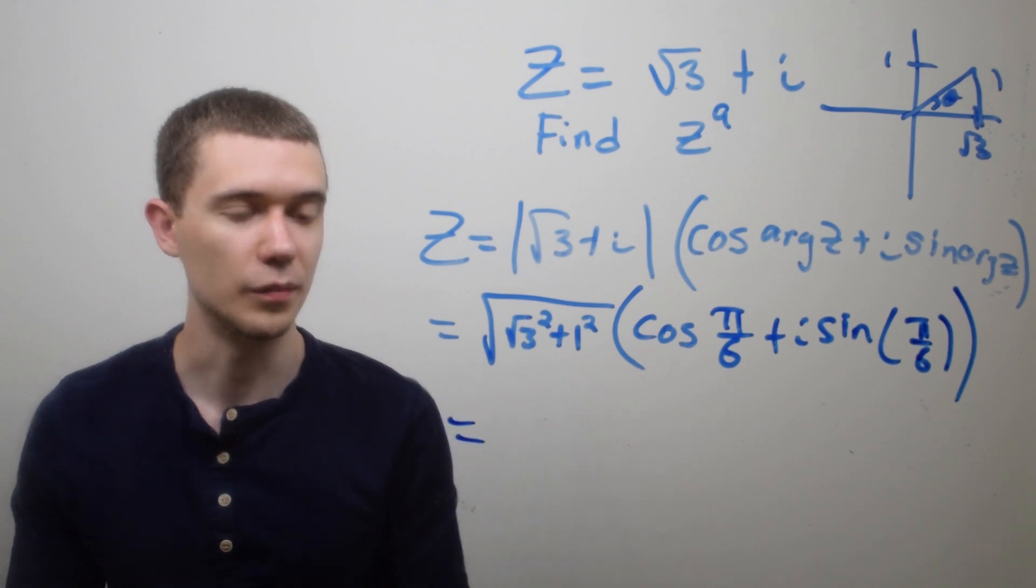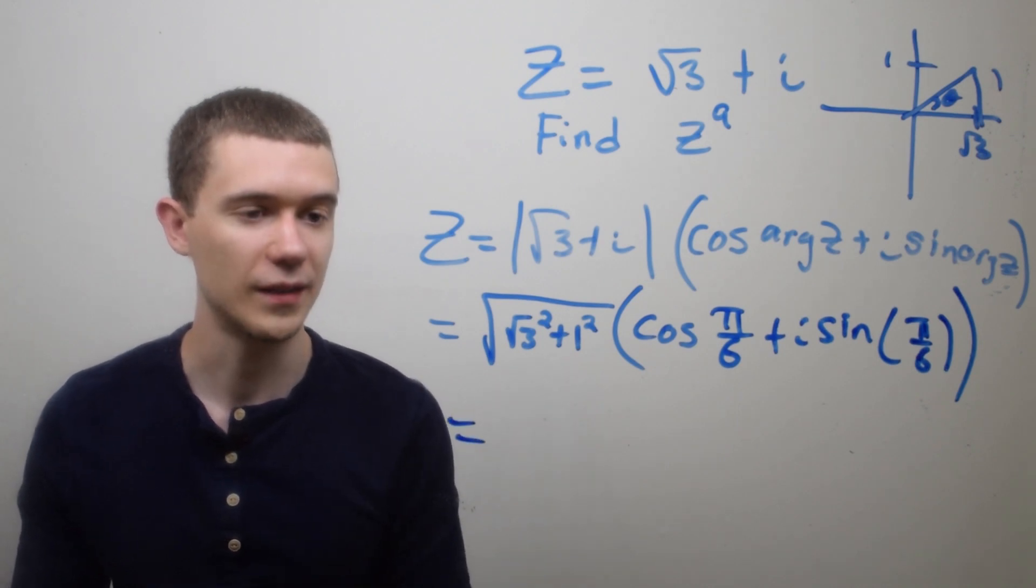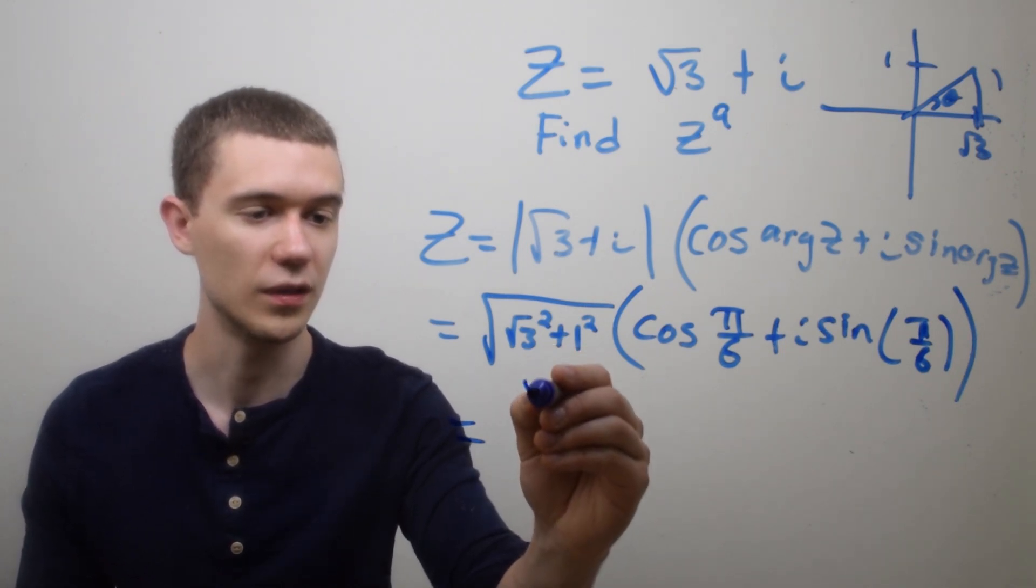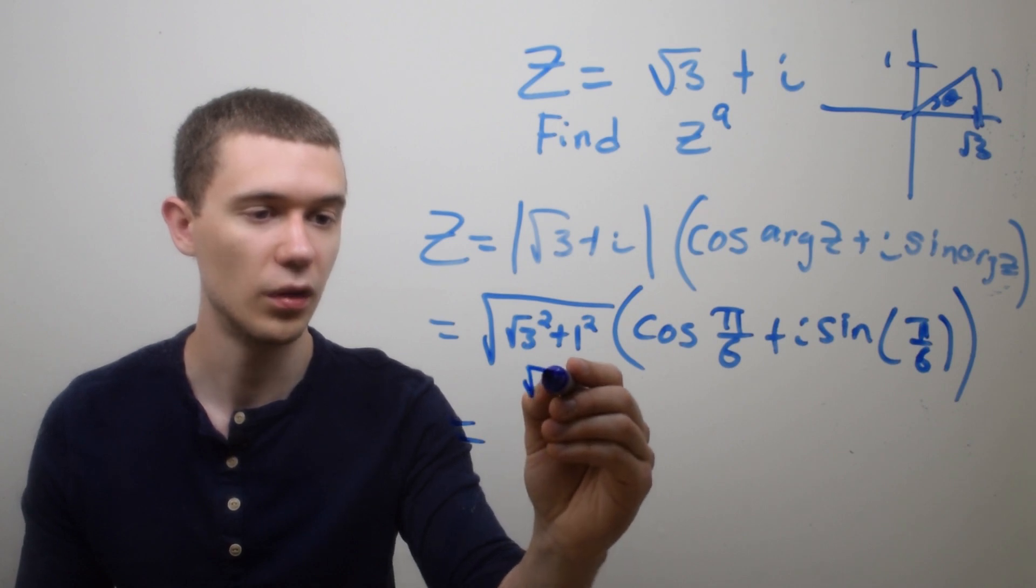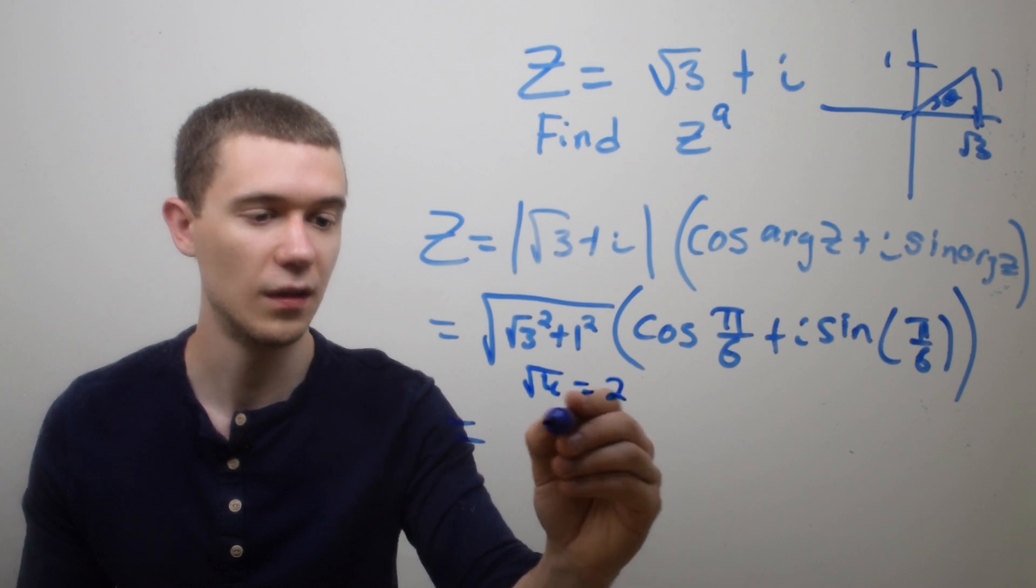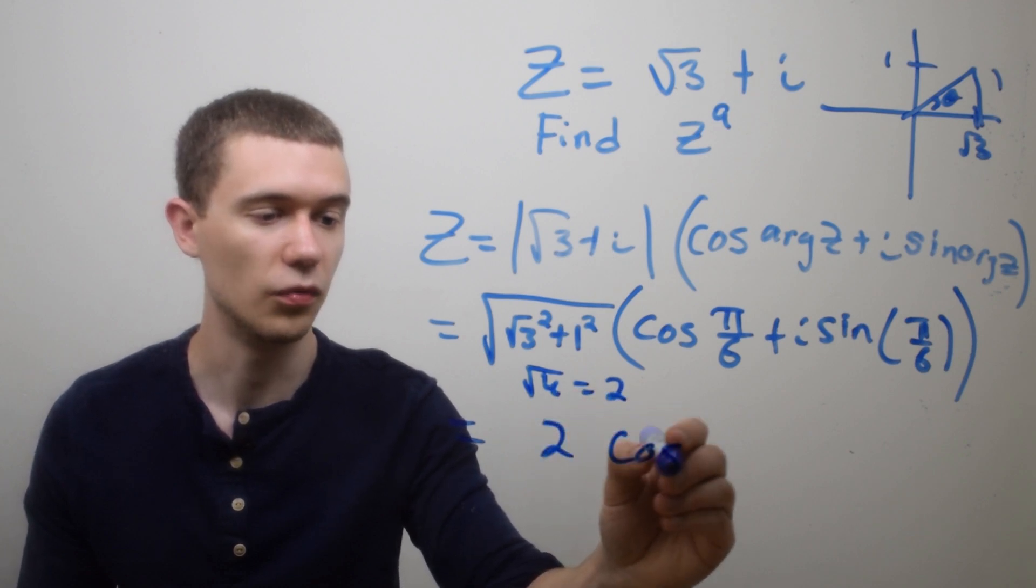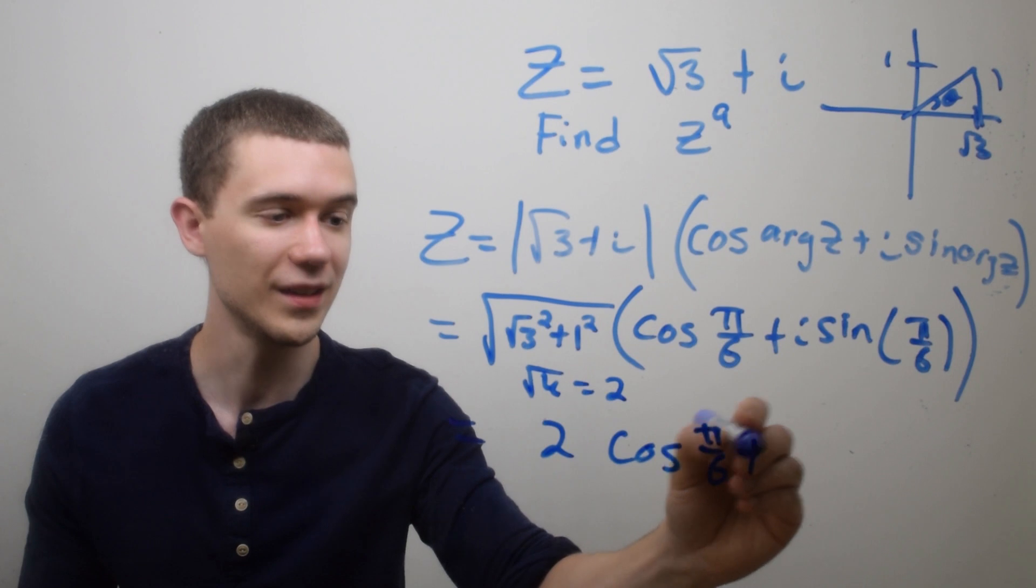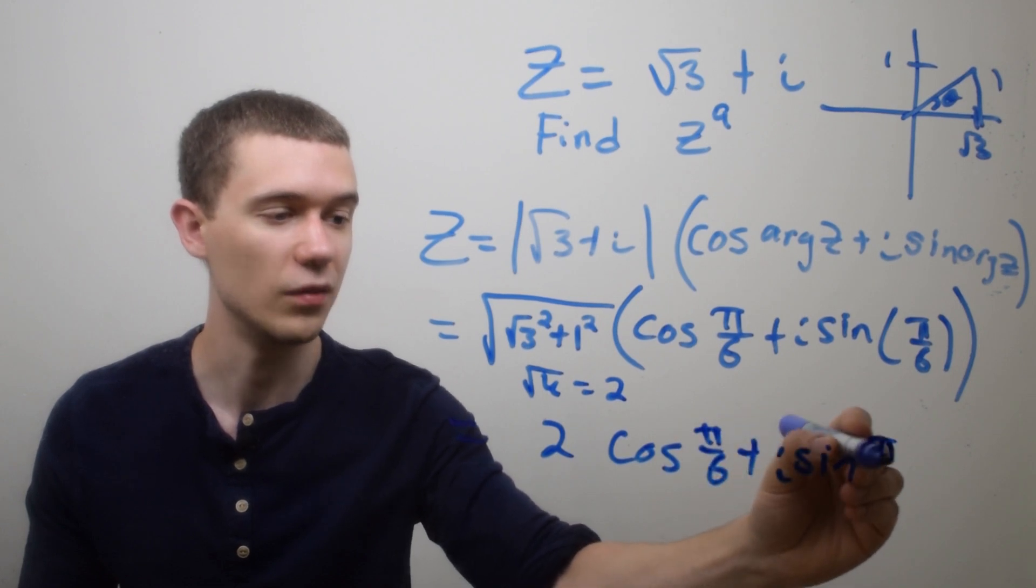And here I'll just simplify the radius, the modulus. √3 squared is 3, 1 squared is 1. So this is really just the square root of four—3 plus 1 is 4—which is just 2. So this complex number in polar form is 2(cos(π/6) + i sin(π/6)).